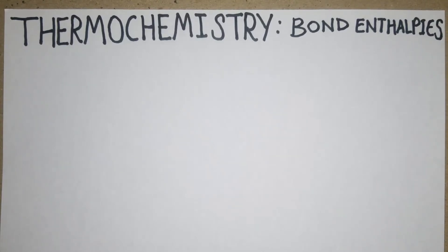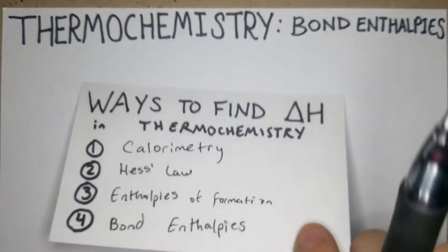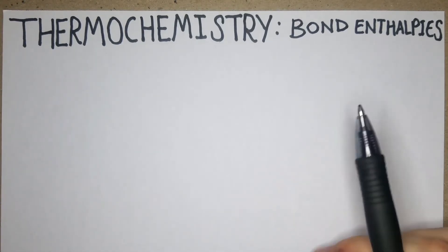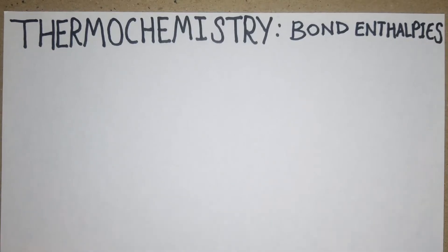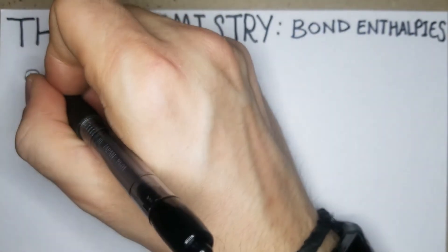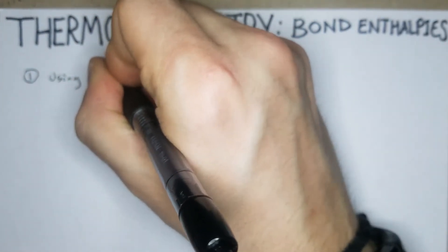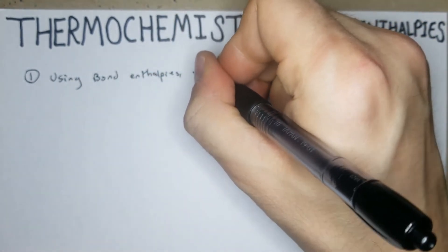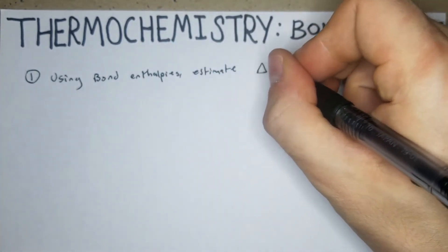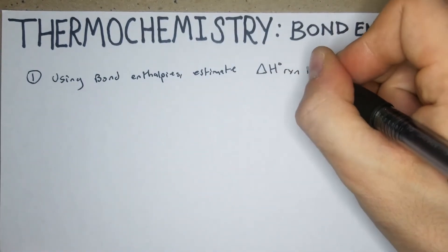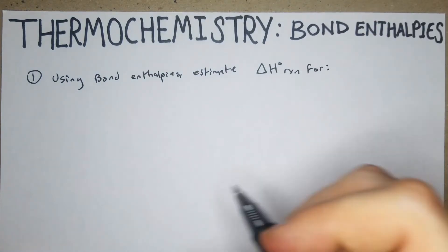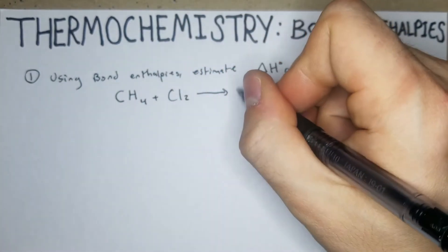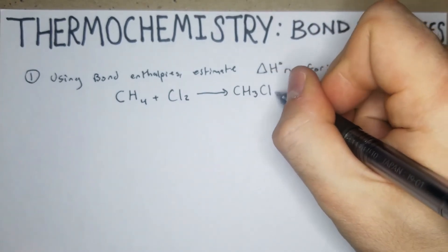How's it going guys, in this video we're going to go over bond enthalpies in thermochemistry and the fourth and final way of calculating delta H or enthalpy. So let's just jump right in. Oftentimes they're phrased like this: using bond enthalpies, estimate delta H rxn for the enthalpy of the reaction, and it'll give you a reaction. CH4 plus Cl2 yields CH3Cl plus HCl.